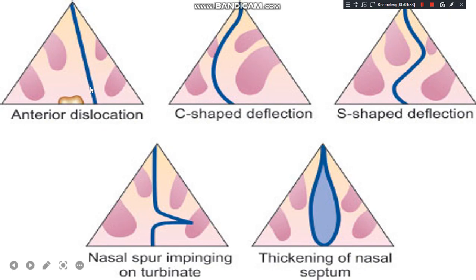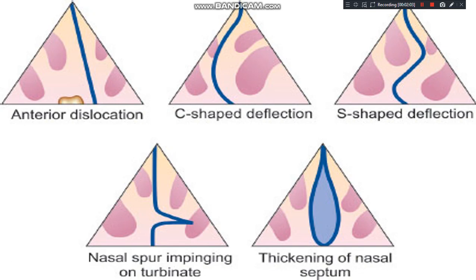In anterior dislocation, the septum is anteriorly dislocated, causing unilateral obstruction only. In C-shaped deflection, there is a simple curve obstructing one side of the nose. In S-shaped deflection, the deviation obstructs both sides, resulting in bilateral obstruction.